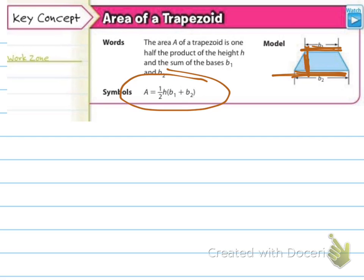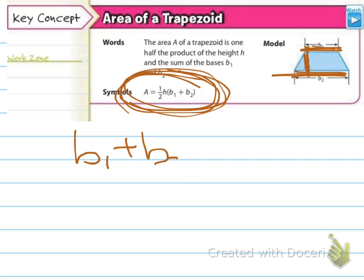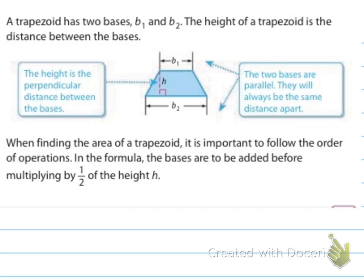Depending on what numbers we're working with will determine which way we want to do the formula, because we can do this one half times height times base sub one plus base sub two, or we can do base one and base two times height, and then divide that by two. And remember that parentheses tell me I'm going to do the adding first here, which is inside parentheses, then I'm going to multiply times height, then I'm going to divide by two.